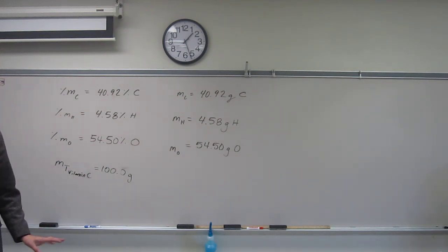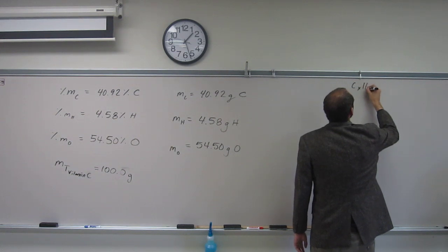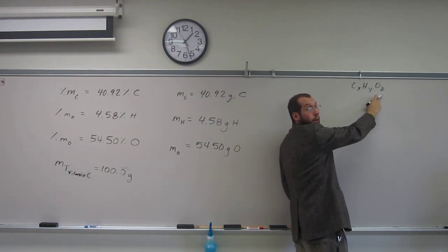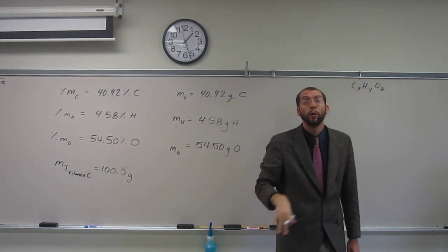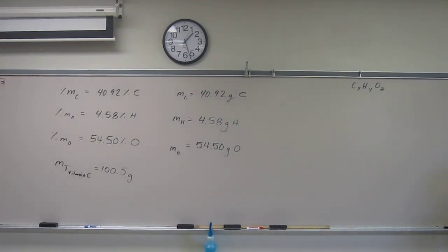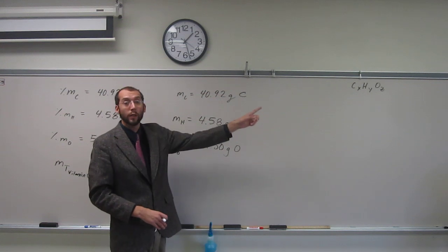Remember though, in the empirical formula, those subscripts of those elements are all going to be whole numbers. And they're all a mole to mole ratio of each other, a whole number mole to mole ratio. They're not a mass to mass ratio. In other words, we have to convert these masses to moles in order to get those X, Y, and Z.